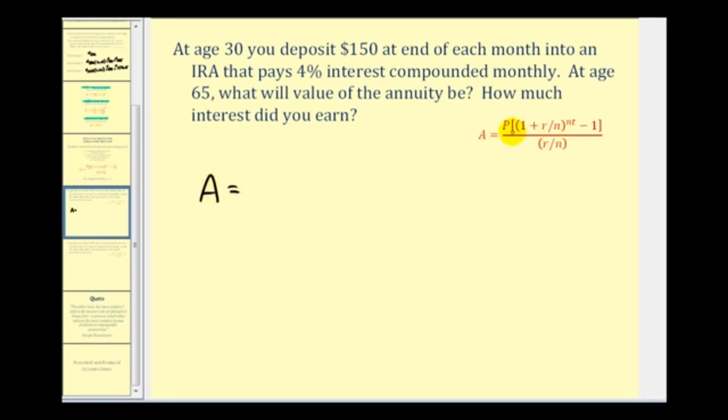So the value of the annuity is going to be equal to P, which is our monthly deposit, times the quantity one plus the rate expressed as a decimal, that'll be 0.04, divided by n, the number of compounds per year, it's monthly, so n is 12, and raise this to the power of n times t, where n is the number of compounds, that's 12 per year, and t is the number of years. Well, from 30 to 65, that'll be 35 years. Minus one, there's our numerator. I'm going to divide this by r divided by n, where r is 0.04, and n would be 12.